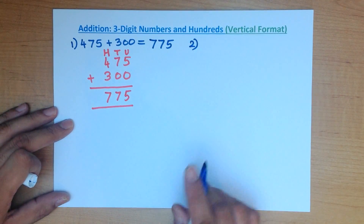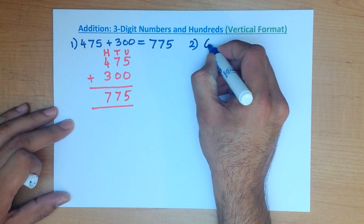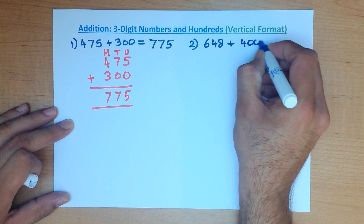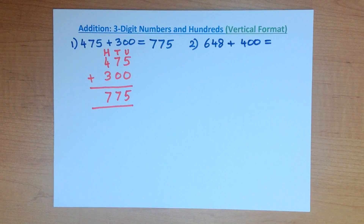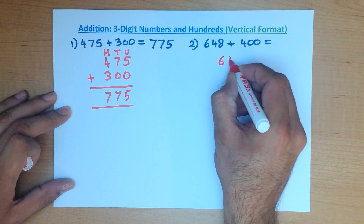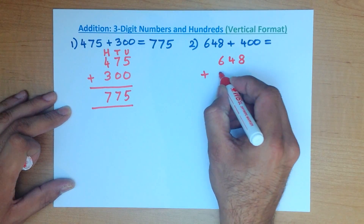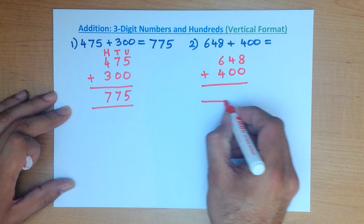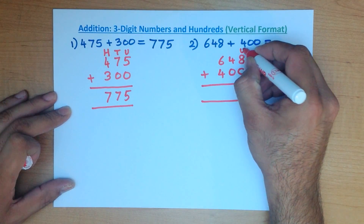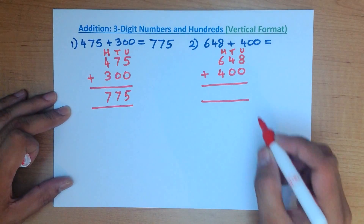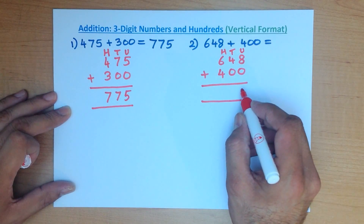Now let's look at the second one. What is 648 plus 400? Let's write these down in the vertical format. 648 plus 400. Let's label them again: units, tens, and hundreds. So let's start with the column on the right-hand side.